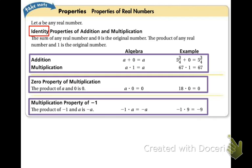Another property is called the identity property of addition and multiplication. So that's that first purple box right here. In addition, what you're doing is you're just adding zero. Well, what happens when you add zero to anything? Nothing. So you can see right here if you add zero to 5 and 3/4, you get 5 and 3/4.